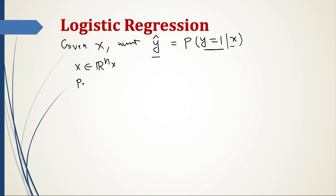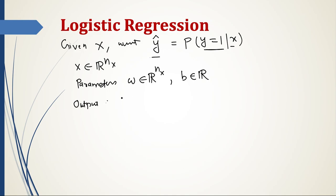When we are doing logistic regression, our parameters will be w, belonging to R^{n_x}, and b, which will be a real number — we will call it the intercept. The output will be y-hat, and how can we get this output from x? One thing you can do is w transpose x plus b.